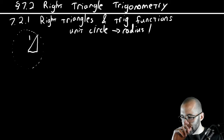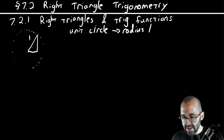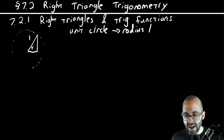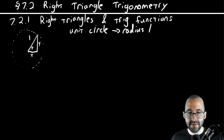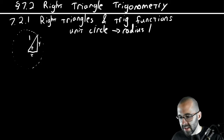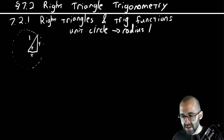Let's get into some vocab. In this triangle, the angle is going to be theta, the base length is going to be x, and the height is going to be y. This point up here is the point (x, y).